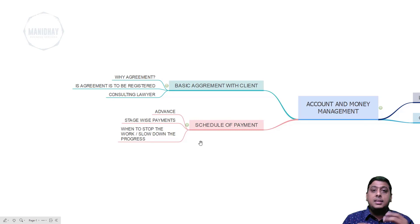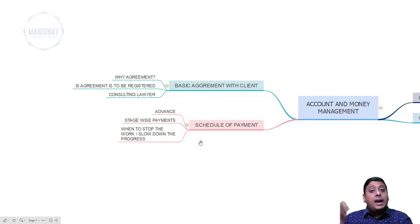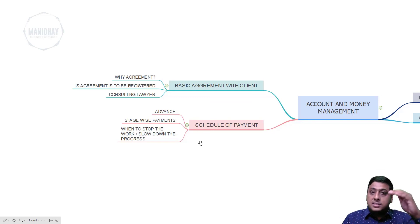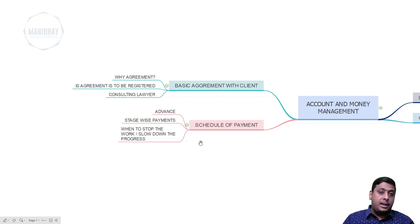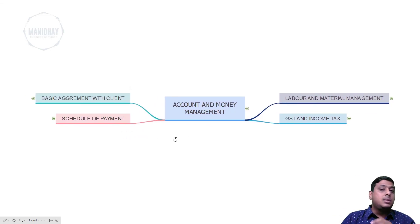In such a situation, you can stop work citing some reason — not directly mentioning the payment issue. Second, you can slow down the process. When the client asks for drawings, you can tell them that another client who has paid more advance is being prioritized, and that their drawings are being slowed down because the full amount for already-released drawings has not been paid. By communicating this, you can control the client and get the payment.